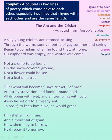Now let us quickly see couplet. The rhyming words decide the couplet — you can check back the rhyme scheme for reference. A couplet is two lines of poetry which come next to each other, especially two lines that rhyme with each other and are the same length.